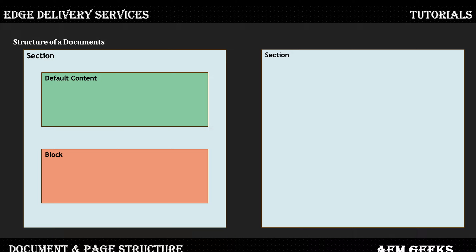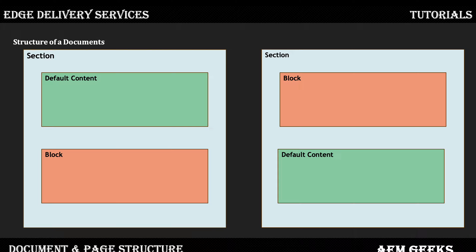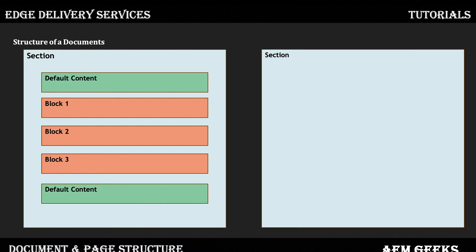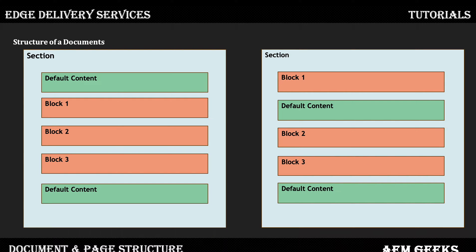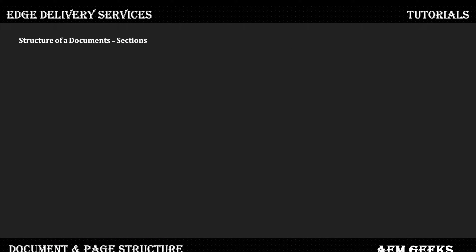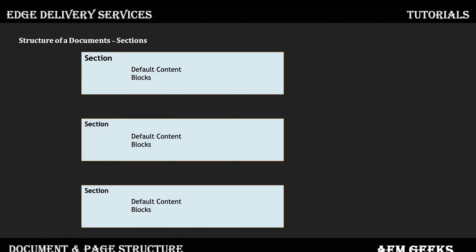A block represents a specific functionality — for example, a carousel, hero, or sections. For specific functionality you write blocks. So you can have either default content or a block, or both — it's completely up to you. You can have multiple default contents and multiple blocks within one section. These three hyphens you see are the most important part of document authoring, as they define the structure and create sections in your document.